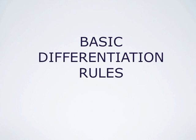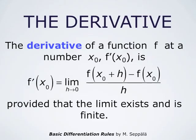We start by recalling that the derivative of a function f at the number x₀, f'(x₀), is the limit of the difference quotient: f'(x₀) is the limit as h approaches 0 of f(x₀ + h) minus f(x₀), divided by h. We assume that the limit exists and is finite, otherwise the derivative would not exist.